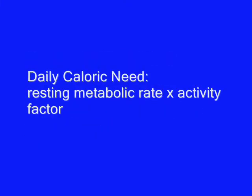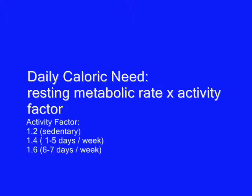Once we figure out your resting metabolic rate using this formula, we multiply it by your activity factor to determine how many calories you need every day. The activity factor is broken down into three categories: 1.2 for sedentary — meaning you don't exercise at all; 1.4 if you exercise one to five days a week; and 1.6 if you exercise six to seven days a week.